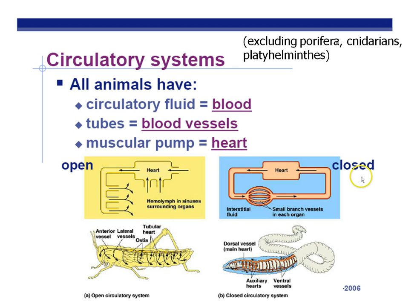A closed circulatory system is more advantageous — we can deliver glucose and oxygen right to the cells of the body. It's a more efficient system. The simplest animal to have a closed circulatory system is the earthworm, phylum Annelida — not the roundworms or flatworms, but the annelids.